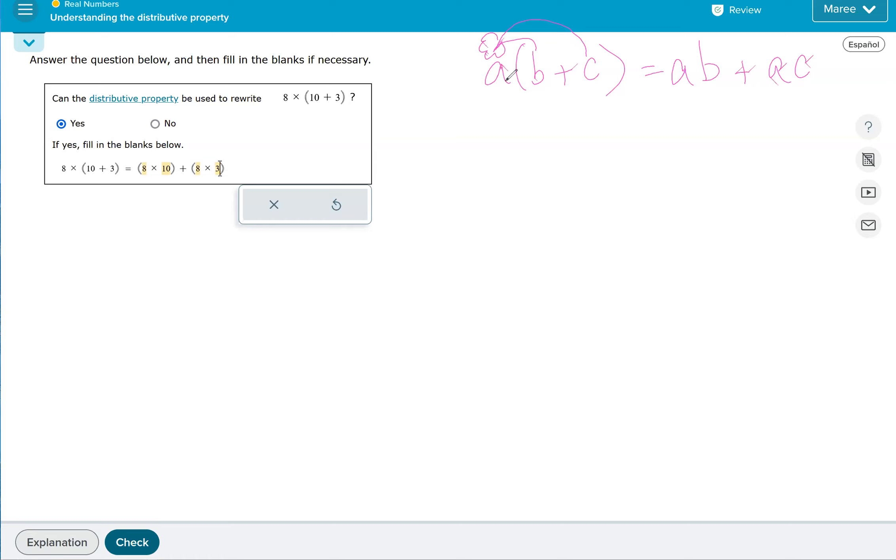Let's look at our property here. Our a was 8, our b was 10, and our c was 3. So we're doing the a, which was 8, times the b, which was 10, plus, and then we do the 8 again times the c, which was 3. You can use this formula and just plug in the numbers that are given to figure out if it works.